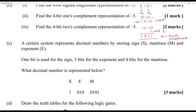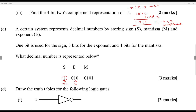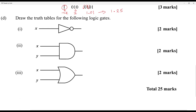Part C: a system represents decimal numbers by storing sign S, mantissa M, and exponent E. One bit is used for the sign, 3 bits for the exponent, and 4 bits for the mantissa. The sign is 1, so it's a negative number. The exponent is 0, 1, 0 which equals 2. The mantissa is 0, 1, 0, 1. We place the decimal point in front of the mantissa and move 2 spaces to the right because the exponent is 2, giving us 1, 0, 1. The decimal part is a quarter — 0.25 — and the 1 is 2 to the power 0, which equals 1. So you get negative 1.25.